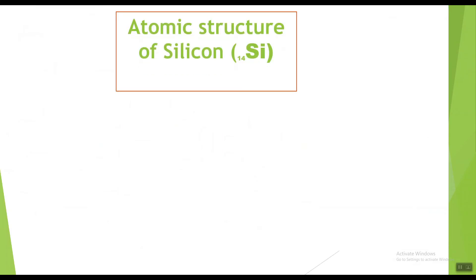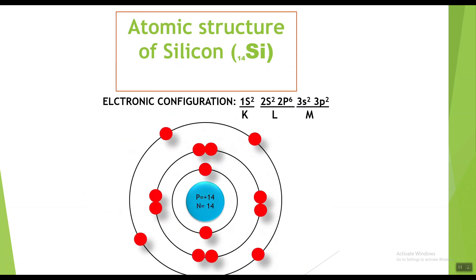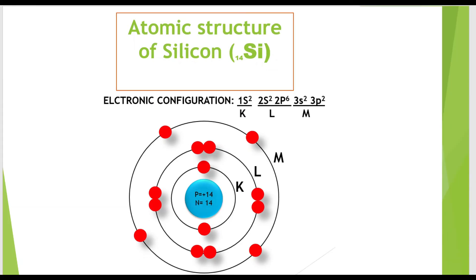Now silicon. The symbol for silicon is Si with atomic number 14, showing it has fourteen electrons. The electronic configuration of silicon is 1s2 2s2 2p6 3s2 3p2, showing two electrons in the K shell, eight electrons in the L shell, and four electrons in the M shell. The atomic structure of silicon shows fourteen protons and fourteen neutrons in the nucleus, with fourteen electrons around the nucleus: two in the K shell, eight in the L shell, and four in the M shell.